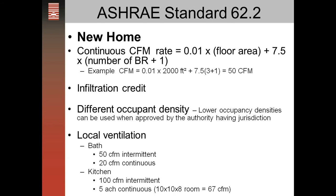The ventilation rate for new homes requires each bathroom to have a 50 CFM intermittent bath fan that can be turned on and off when you'd like, or you could have a 20 CFM continuous fan. You have the option between those two.